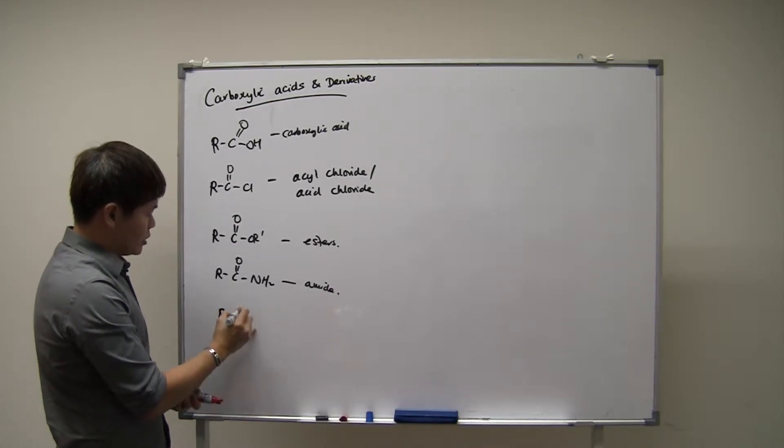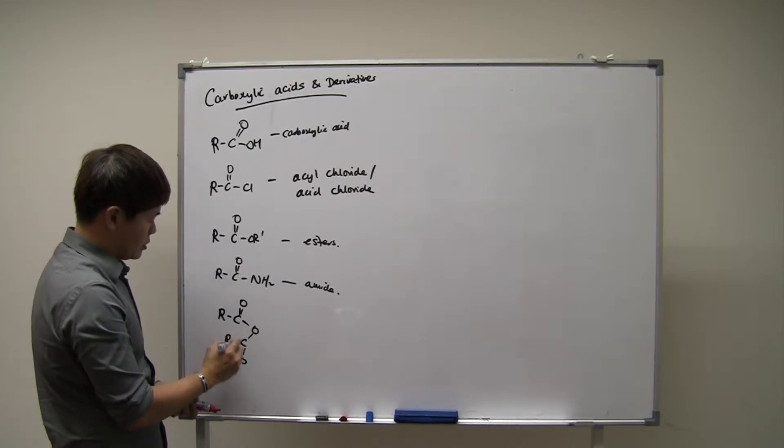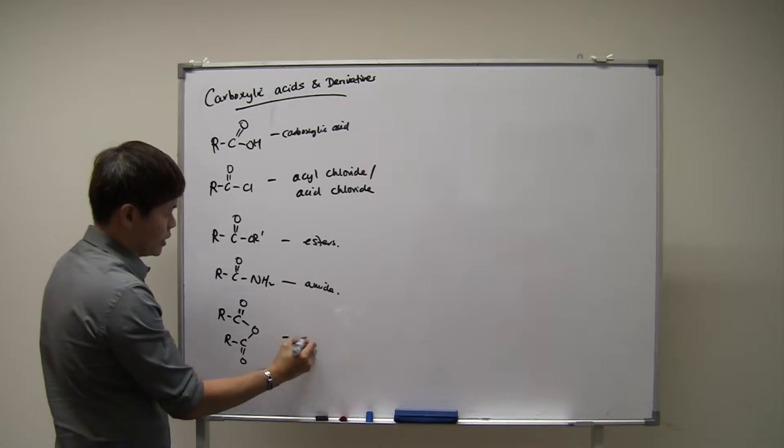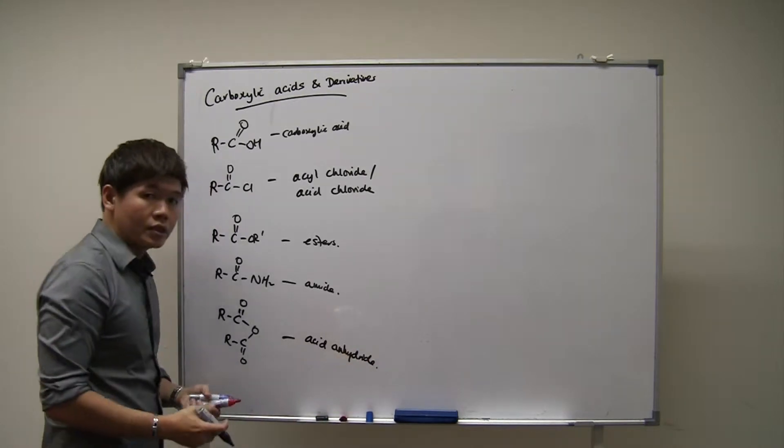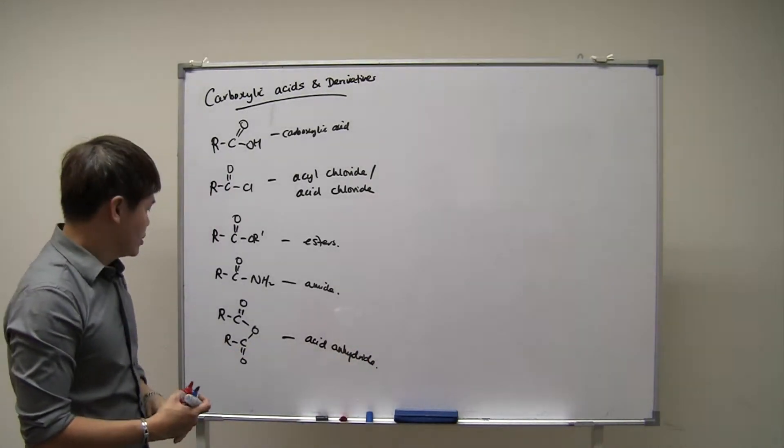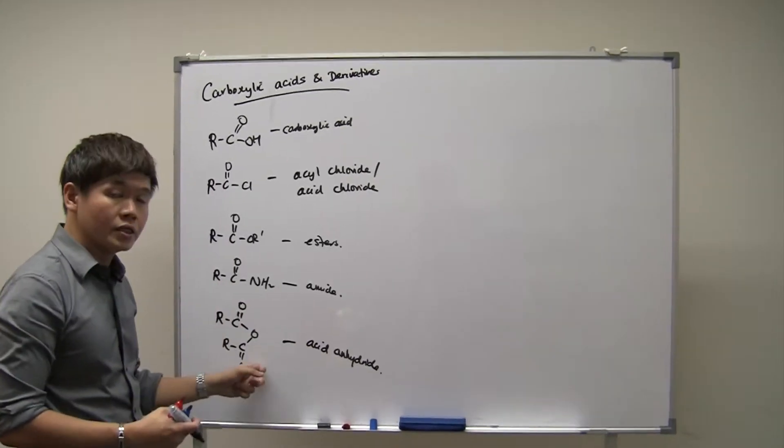And there's another derivative that is not in the syllabus, but it comes out once in a while in exams. Now this particular guy is called an acid anhydride. Acid anhydride usually comes on exams in the synthesis of aspirin. So we'll see this sometimes in exam questions, even though this is not taught separately in the syllabus.